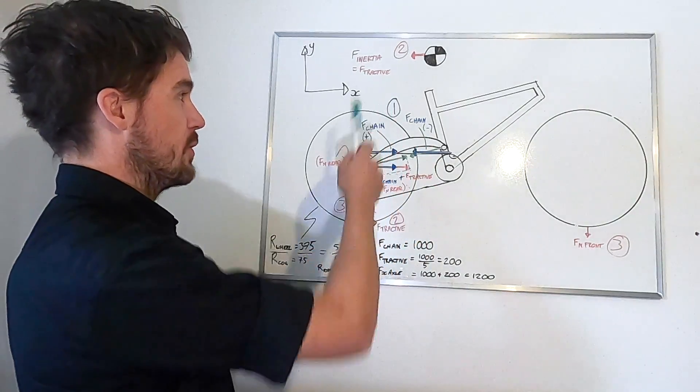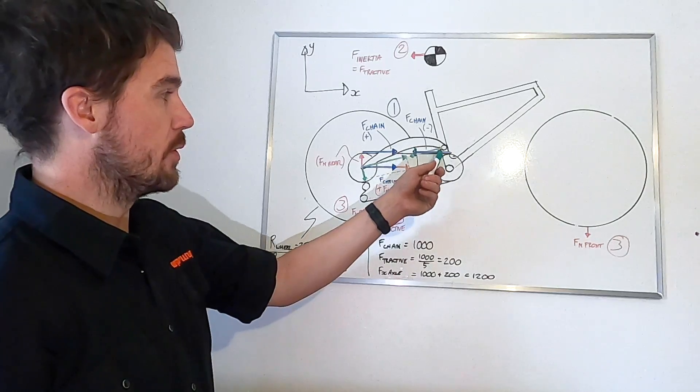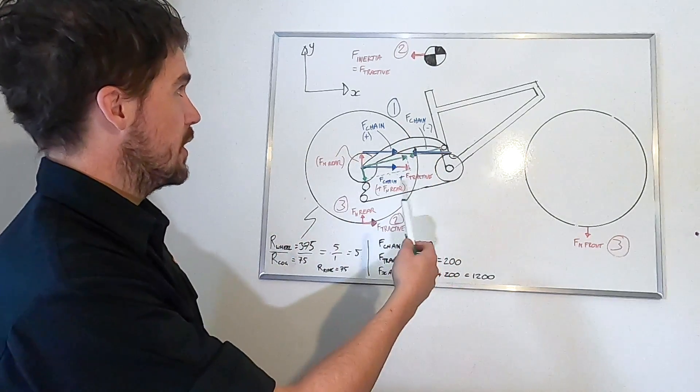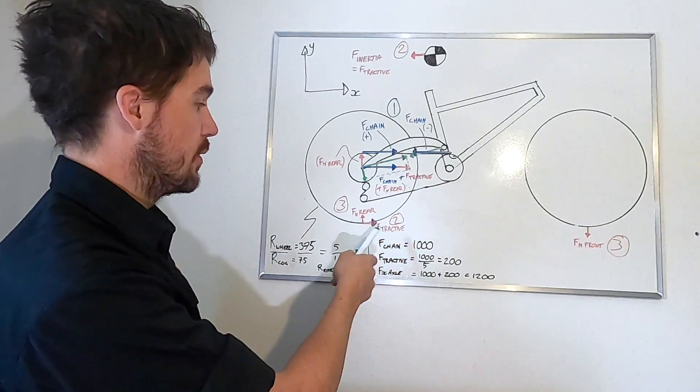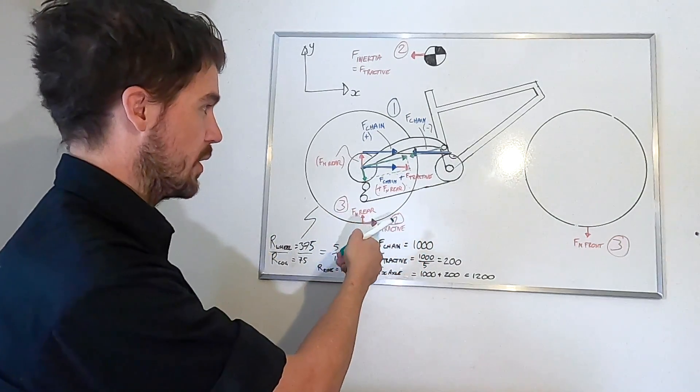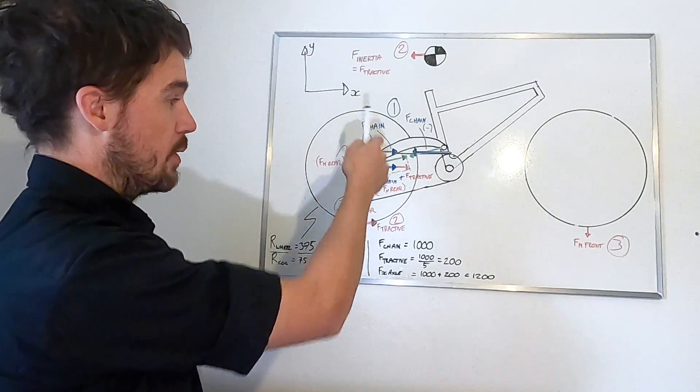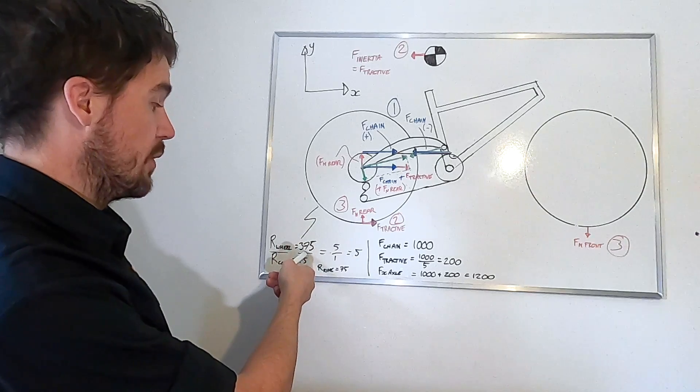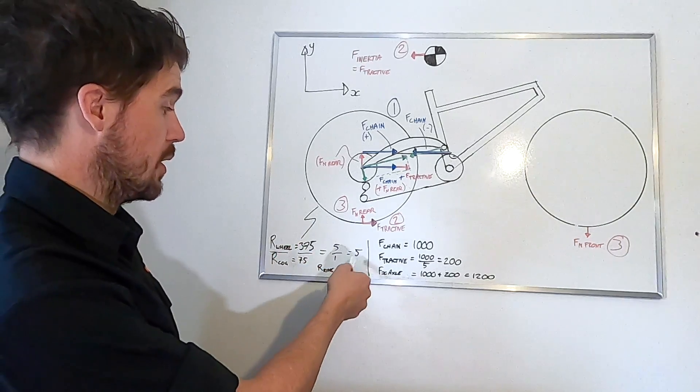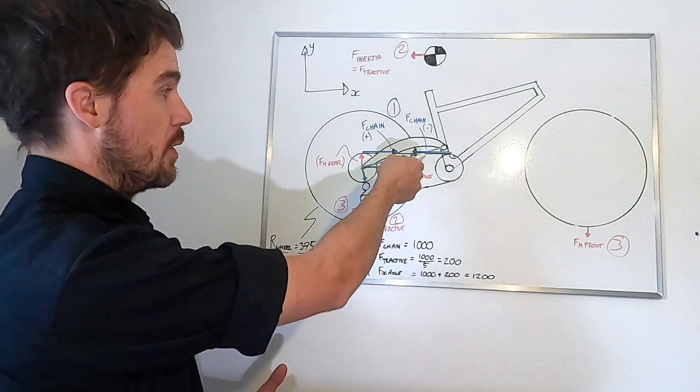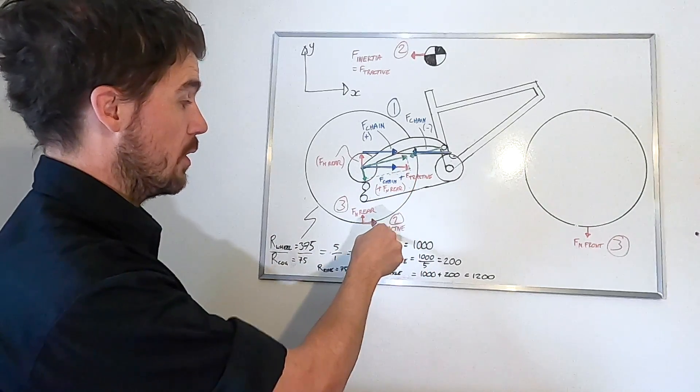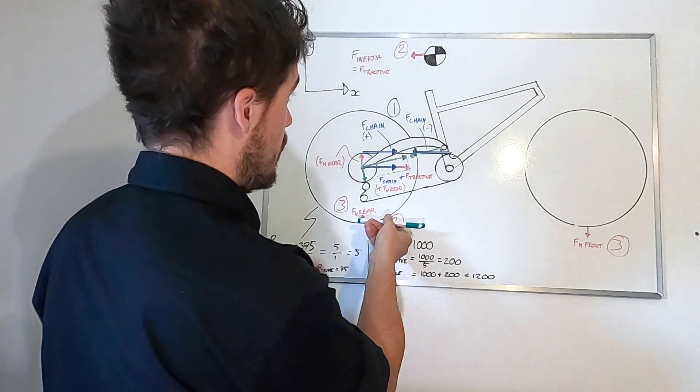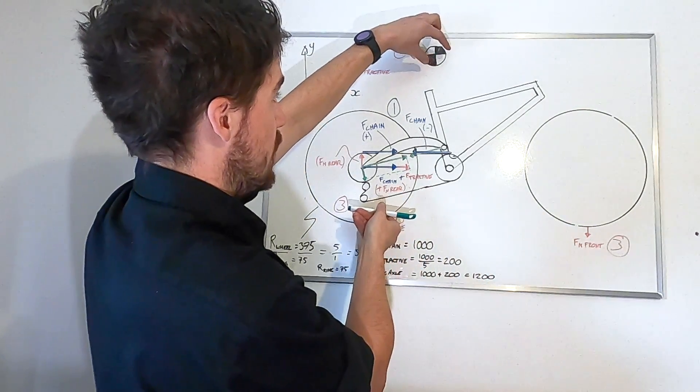So, in order of operations, the first thing we do, we pedal. We apply some load to the chain. Let's say we generate 1,000 newtons in the chain. What that does, secondly, is generate this tractive force at the tire. So it's a horizontal force at the rear tire, and that's in proportion to the ratio of radii, or diameters, of the rear cog and the wheel. So if the rear wheel is 375 diameter, the rear cog is 75 diameter, then we have a ratio of 5 to 1. So 1,000 newtons of chain force means 200 newtons of tractive force at the tire.